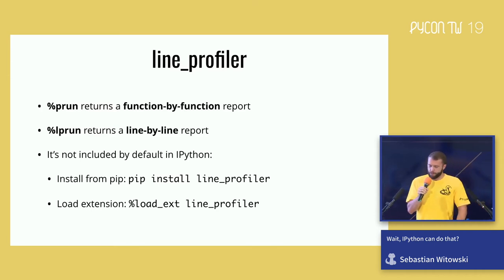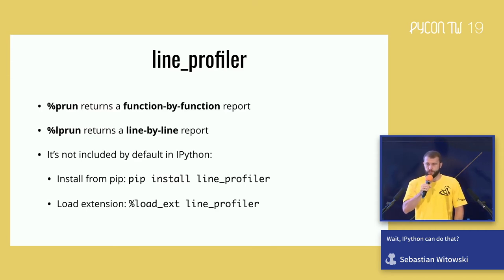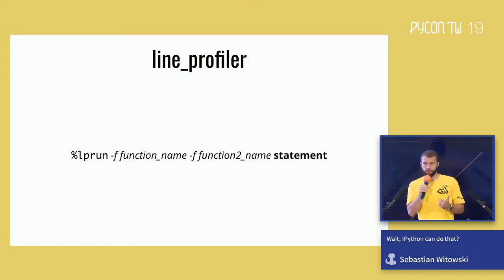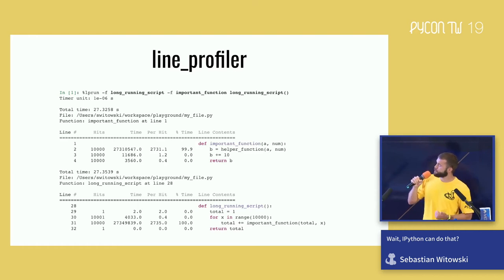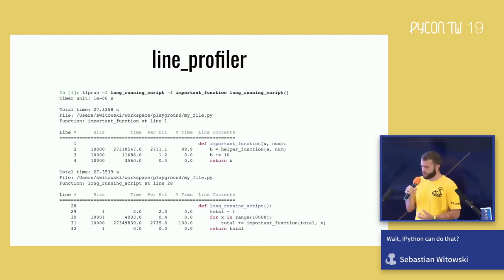Another interesting type of profiler is the line profiler. While `%prun` reports how much time each function took, `%lprun` — the line profiler — gives even more detailed information and shows a line-by-line report of how your code was executed. Since this profiler is not included with IPython by default, you have to install it with pip and load it as an extension. To run it you need two parts: a statement — a function or piece of code to execute — and you need to specify which functions you want to profile. Here I'm running `long_running_script` and profiling two functions: `long_running_script` itself and `important_function`. The line profiler generates a nice report for each function showing how many times each line was run, how much time was spent on it, and what percentage of total running time.